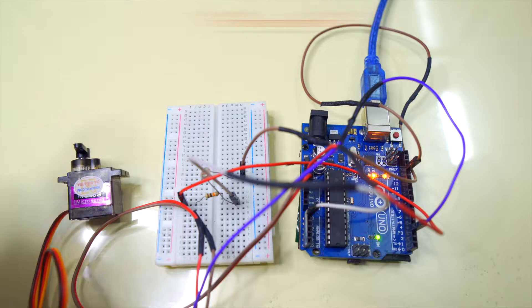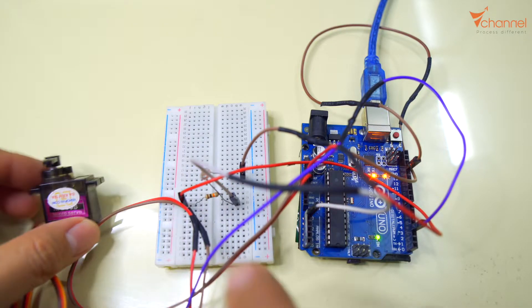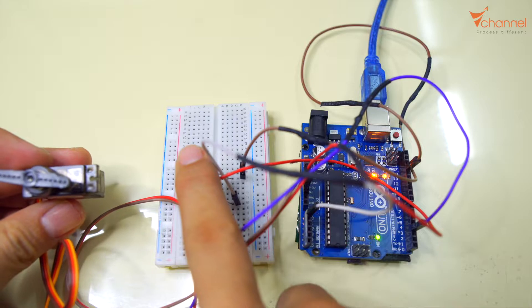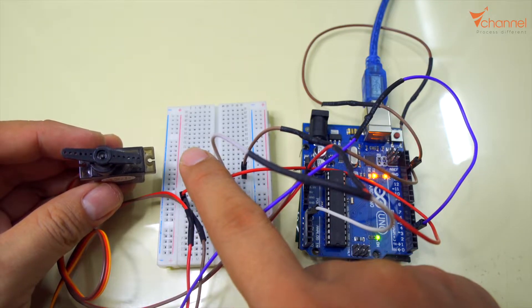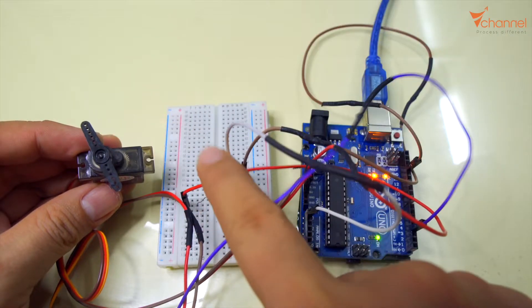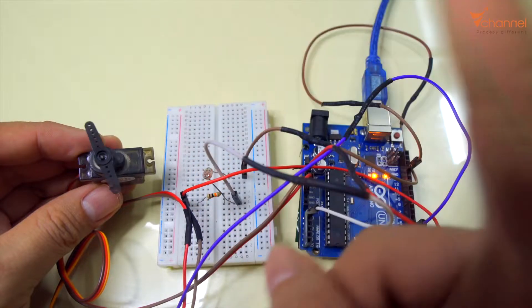Perfect. Let's see. We can control the servo now. This is when I cover the photo resistor. Dark. Light. Dark. Light.